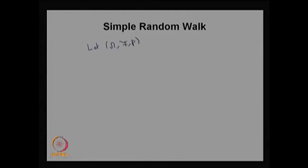Now we are going to discuss the third type of stochastic process: the simple random walk. Given a probability space, we define a sequence of random variables Xi's. Those random variables are integer-valued, and all the Xi's are IID — independent and identically distributed — as well as integer-valued discrete-type random variables.